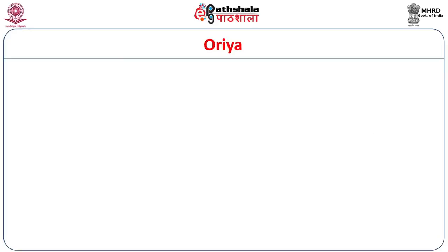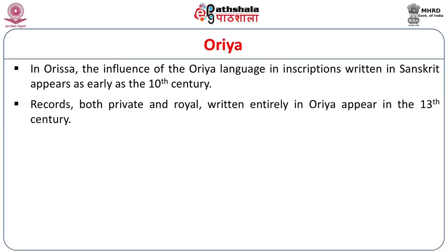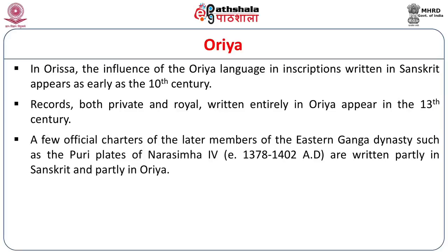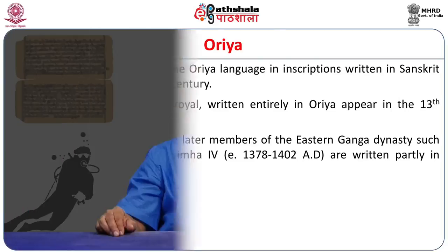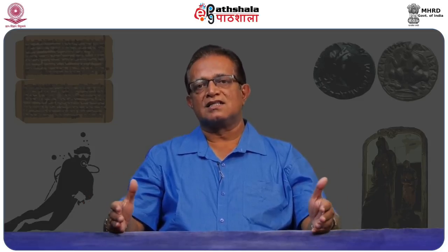Another important language we come across in the Eastern sector is the Orian inscription. In Orissa, the influence of the Orian language in inscriptions — Sanskrit appears as early as the 10th century. Records both private and royal written entirely in Orian appear from the 13th century onwards. A few official charters of the later members of the Eastern Ganga dynasty, such as the Puri plates of Narasimha IV, are written partly in Sanskrit and partly in Orian. You will notice how Sanskrit again and again occupied a very prominent place, irrespective of region or dynasty — it formed an integral part of the epigraphical tradition.